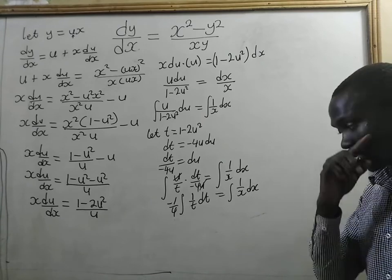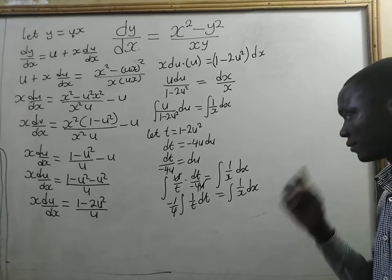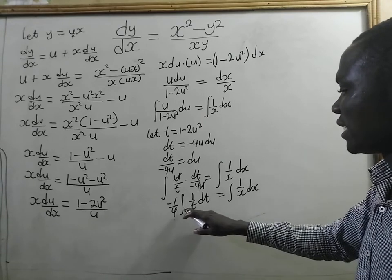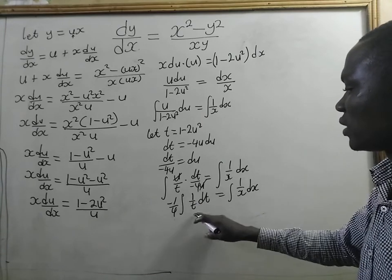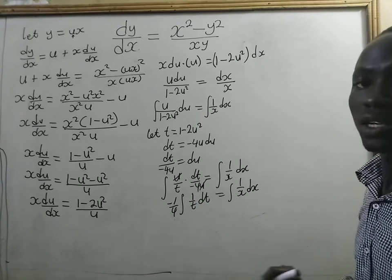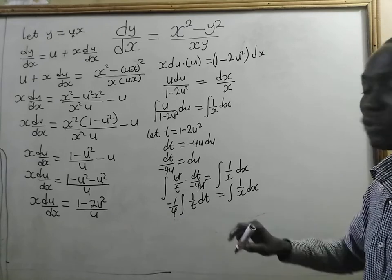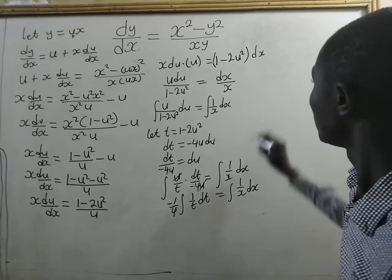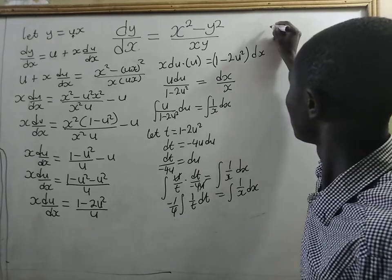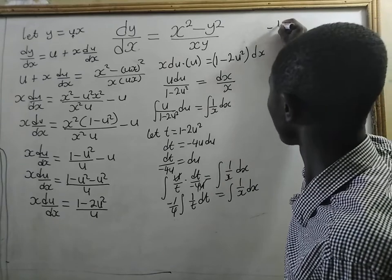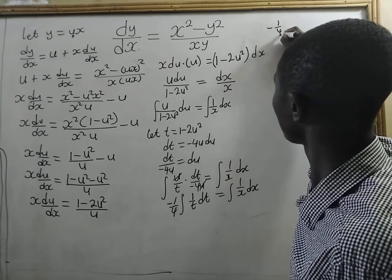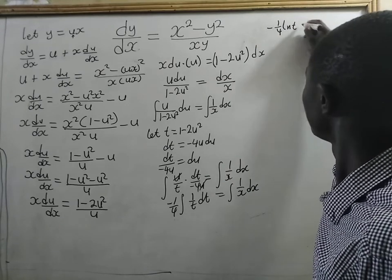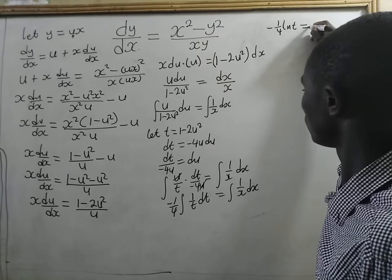Very simple. Integrating 1 on t dt gives ln of t. So we have minus 1 on 4 ln t equal to ln x plus c.